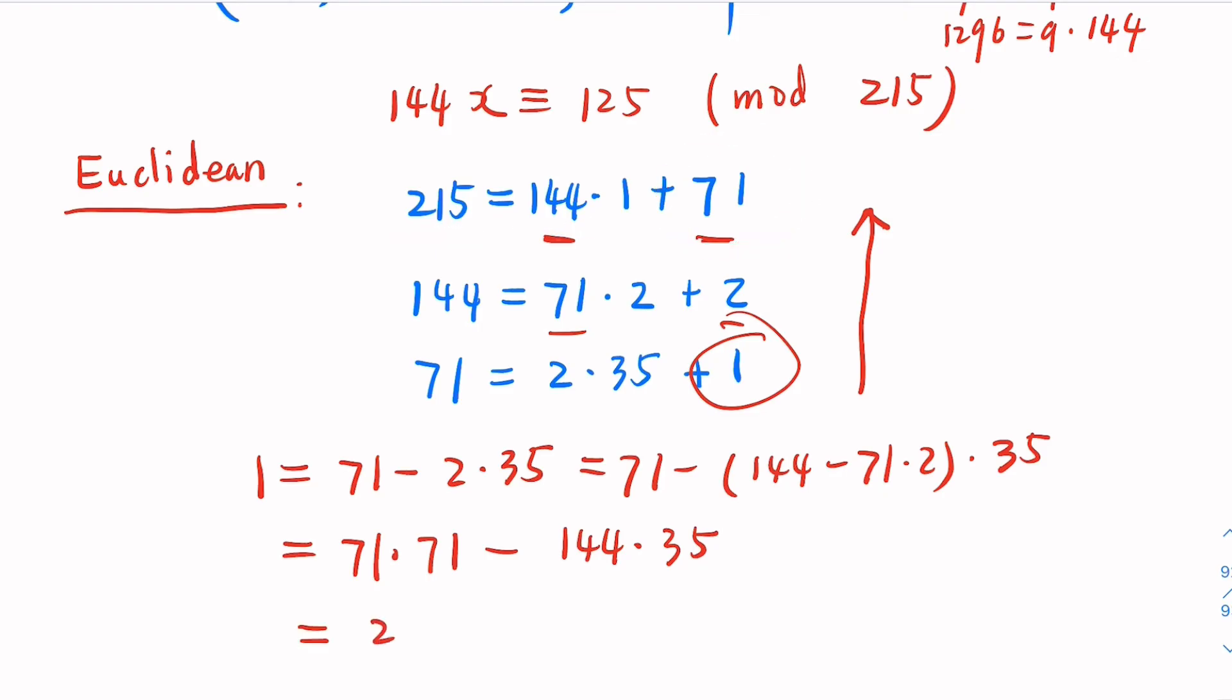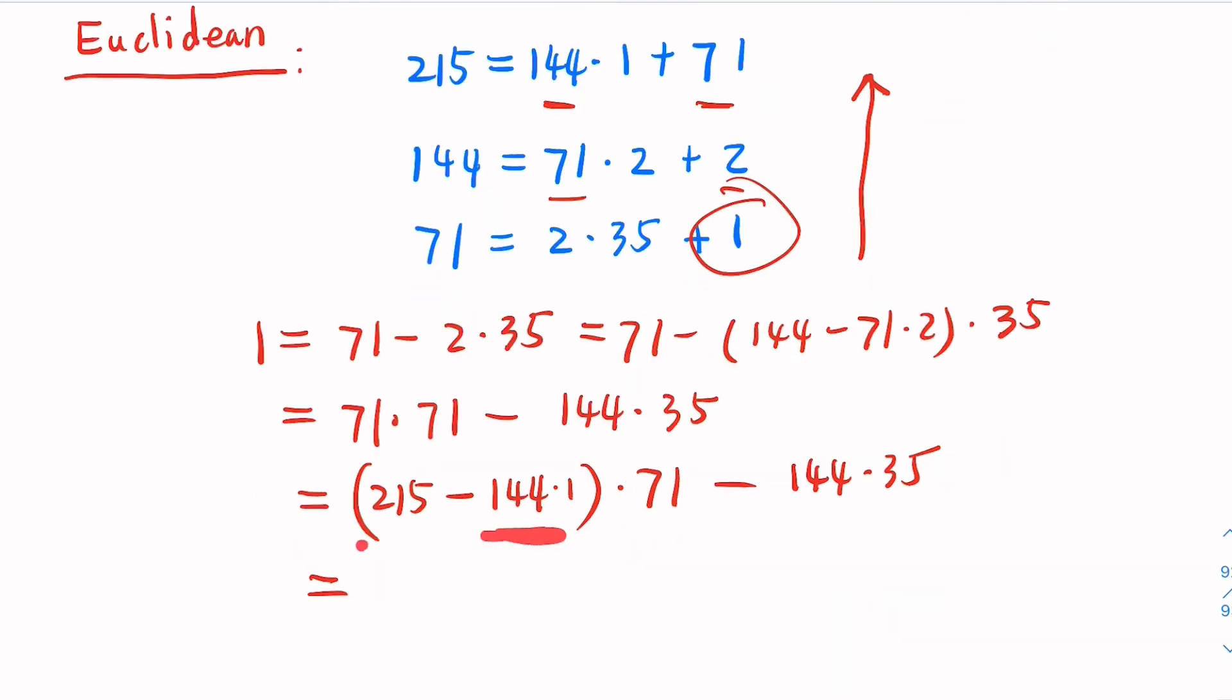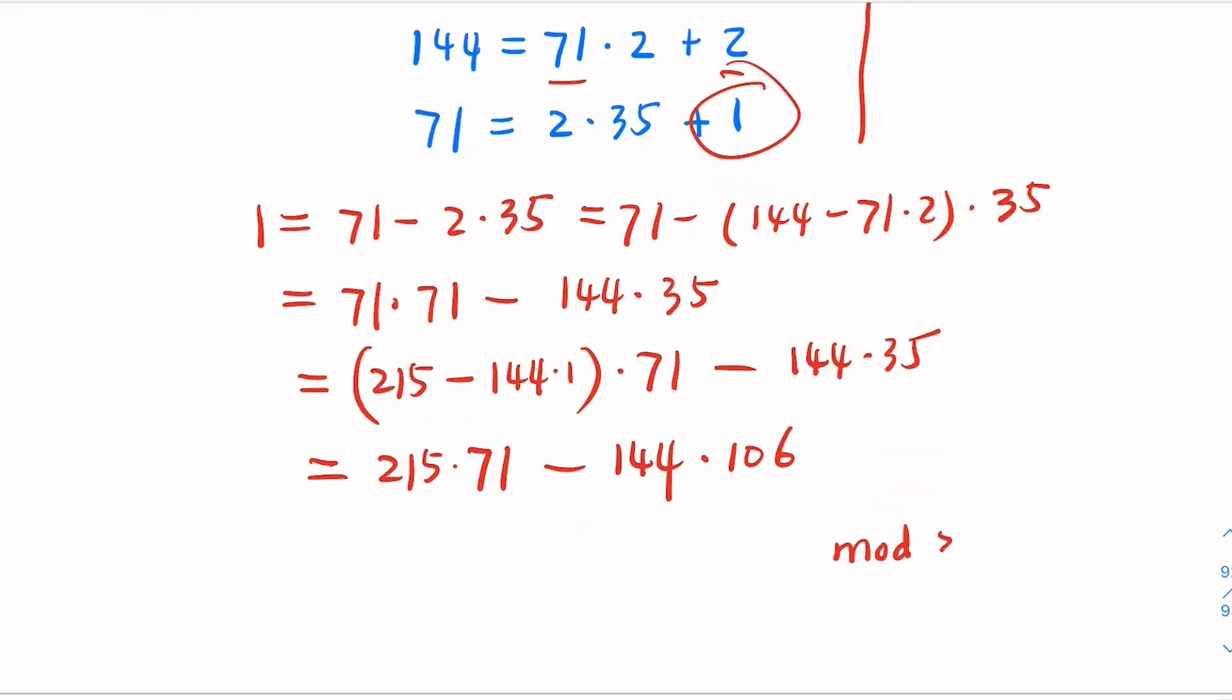So, it's 71 times 71 minus 144 times 35. You replace 71 with 215 minus 144. So, 71 is 215 minus 144 times 1, and then times 71 minus 144 times 35. You combine 144 here, 215 times 71 minus 144, 71, and 35, 106. In terms of mod 215.